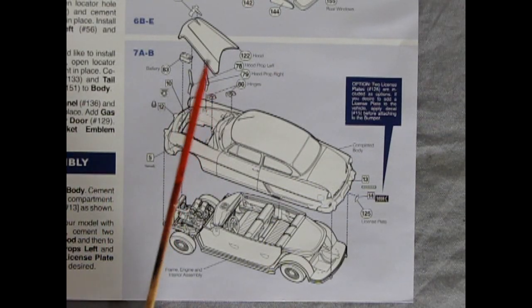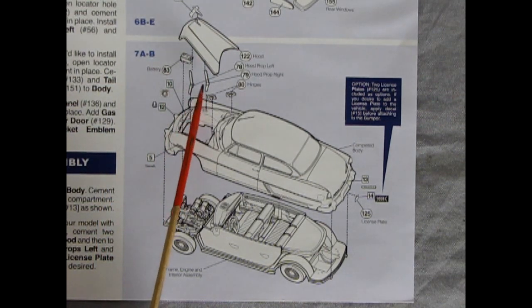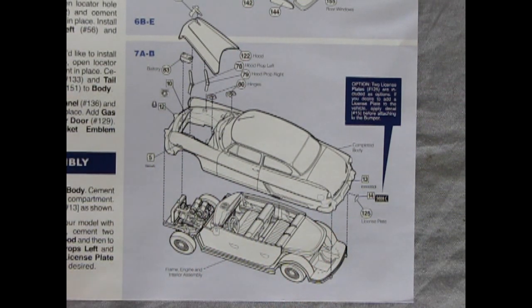And then we have our windows and our sun visors going in as well. Panel seven shows our final assembly with our hood and hood emblem being glued together. We have a battery that drops in. There's our hood hinges as well as a lot of decals which go up in here and then our entire body drops down onto that cool interior and chassis. And then we get a license plate for the back.